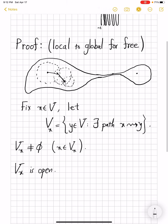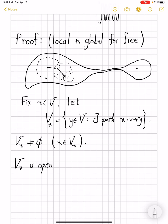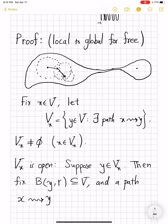And this is where we use openness of V. Suppose y belongs to Vₓ. Then fix a ball of center y that is completely contained in V and a path from x to y, which we call γ₁. This path exists by assumption because y belongs to Vₓ exactly means that there is some path from x to y.